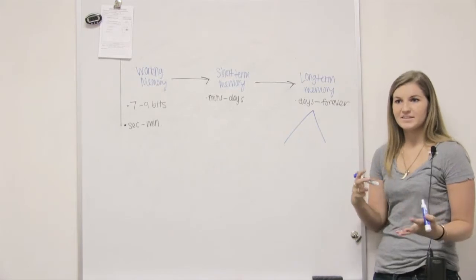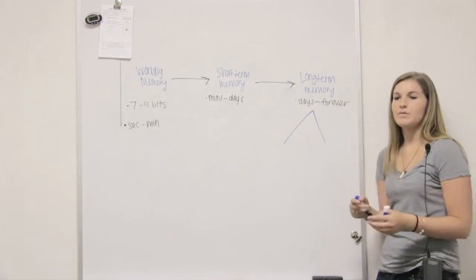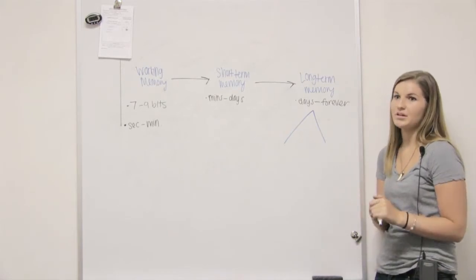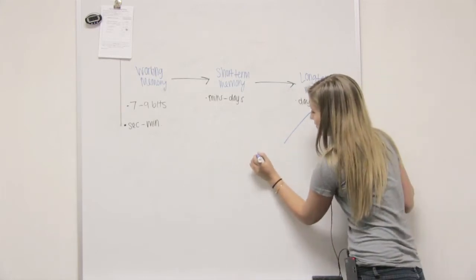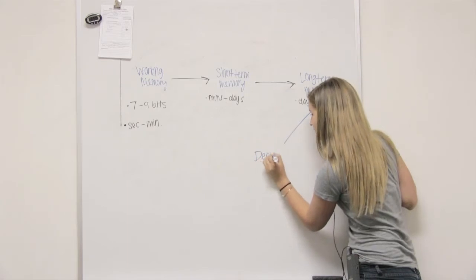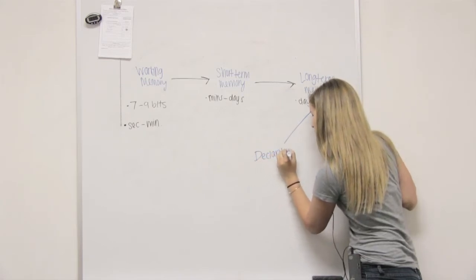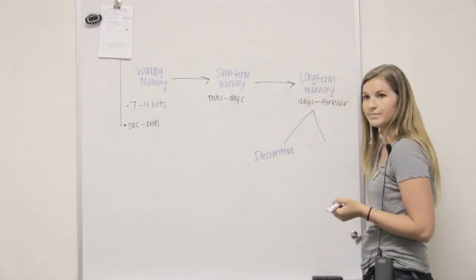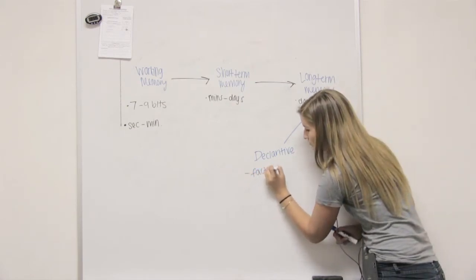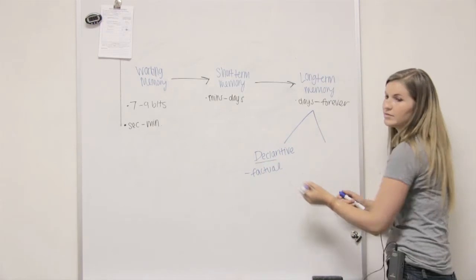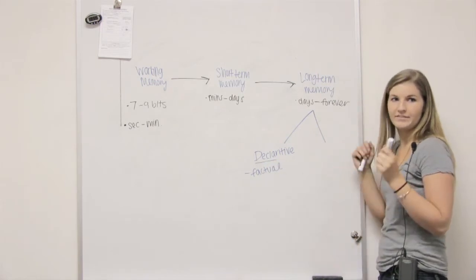There's kind of the facts of life, like what's your name? Where were you born? What's the capital of Idaho? Things like that. Who's the president? That's going to be declarative long-term memory. So this is factual. So things you declare. Five times five is 25.